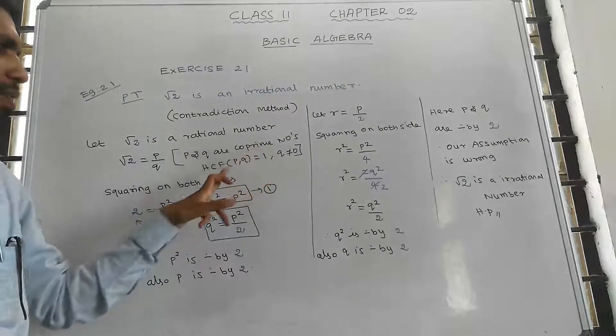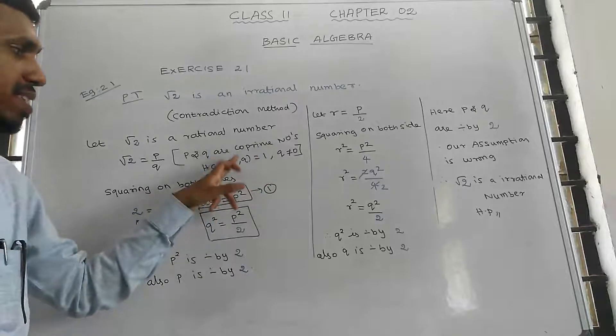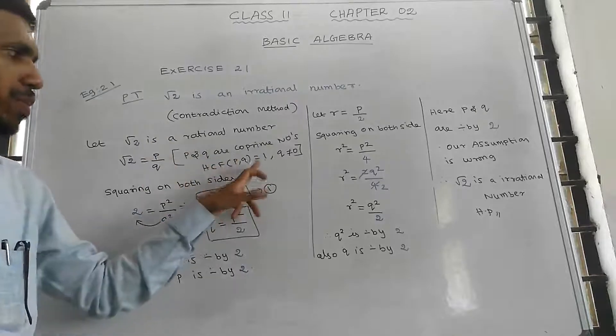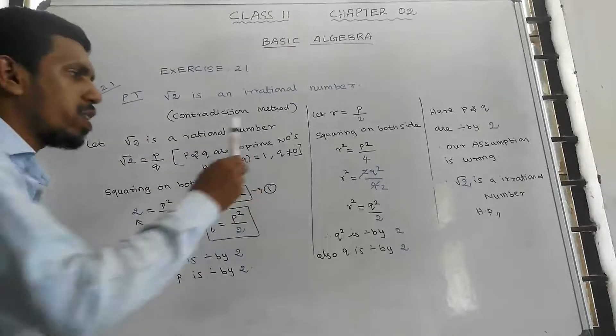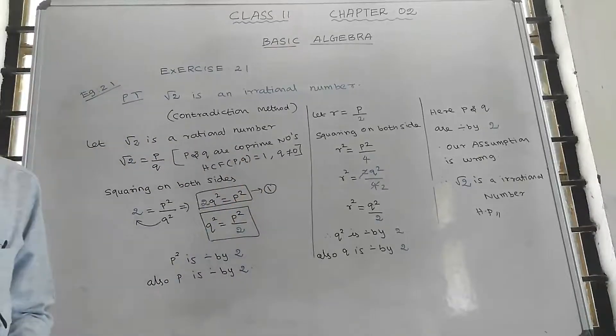What is a co-prime number? Their HCF is equal to 1. And q is not equal to 0.